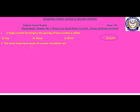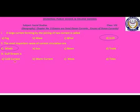Question two: The most important cause of current circulation are — options: A) winds, B) sun, C) moon, D) trade. The correct answer is A) winds. Question three: Gulf Stream is — A) cold current, B) warm current, C) wave, D) tides. The correct answer is B) warm current, as we have already studied — Gulf Stream is a warm current.